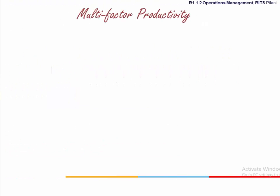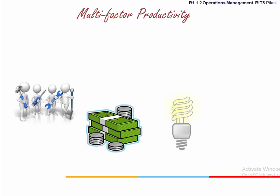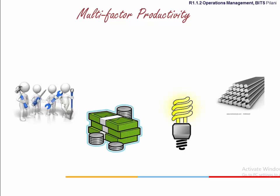A multi-factor productivity will consider several input factors including labor. The other factors can be capital, energy, material, etc. A word of caution: before computing the output-input ratio, we need to express all the input factors in the same unit of measurement.